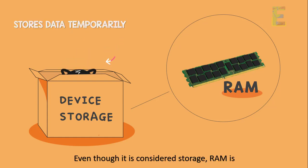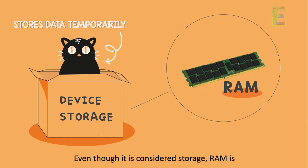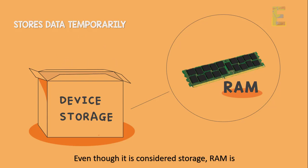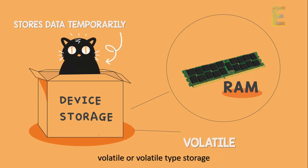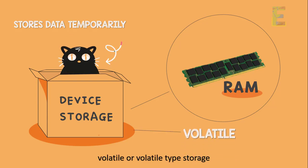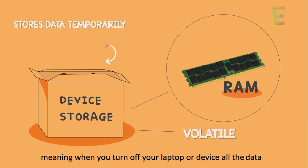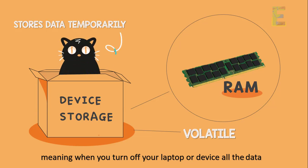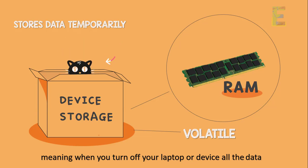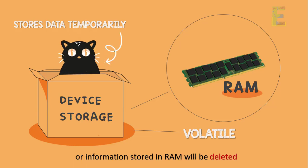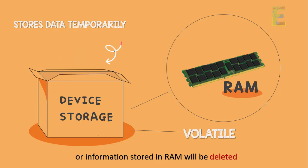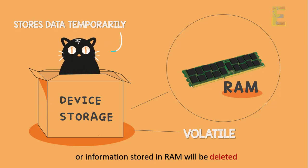Even though it is considered storage, RAM is a volatile type of storage, meaning when you turn off your laptop or device, all the data or information stored in RAM will be deleted.